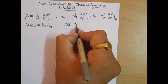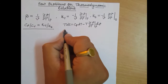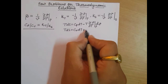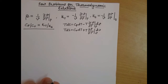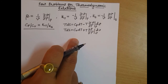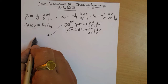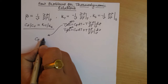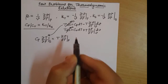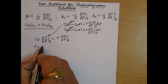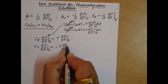One of the TdS relations says TdS is equal to Cp dT minus T times del V by del T at constant pressure, times dP. The second one says TdS is equal to Cv dT plus T times del P by del T at constant volume, times dV. If the process is isentropic, that means entropy does not change.